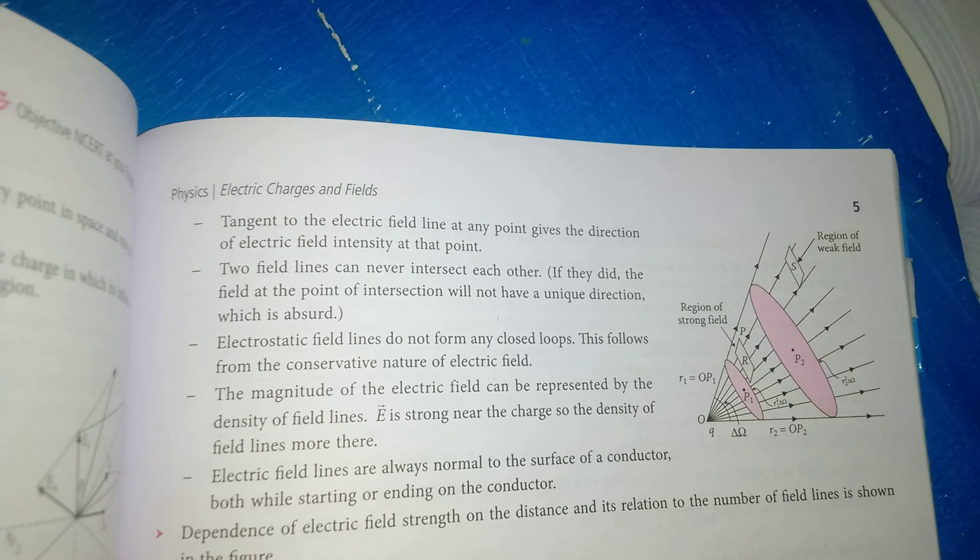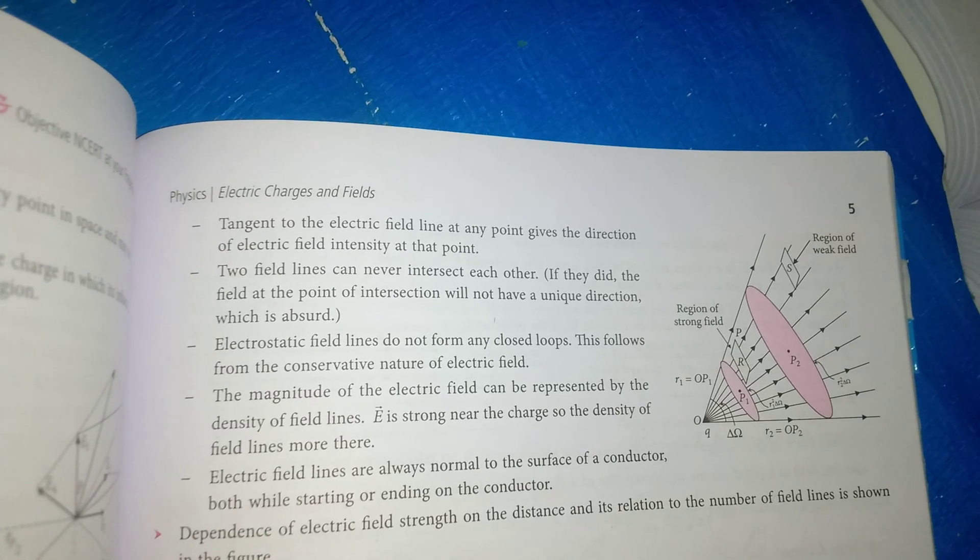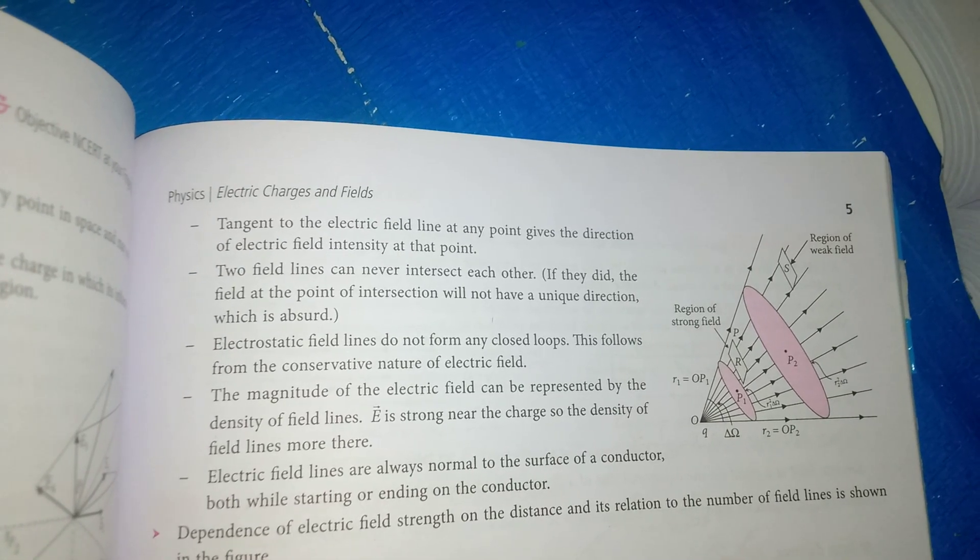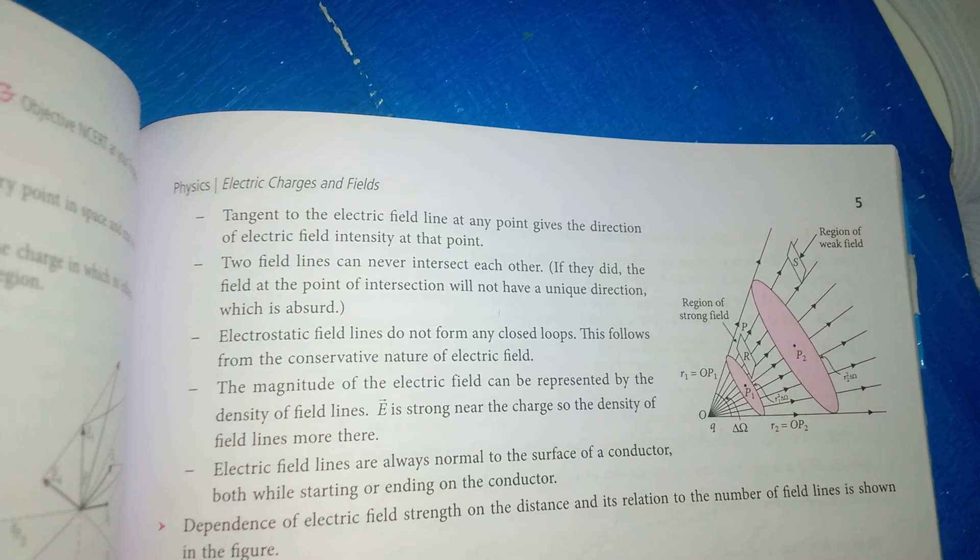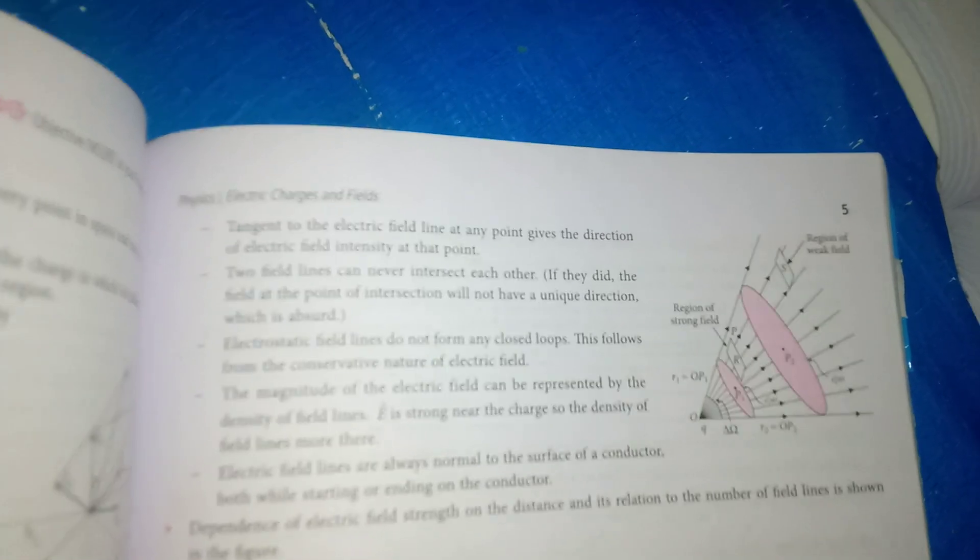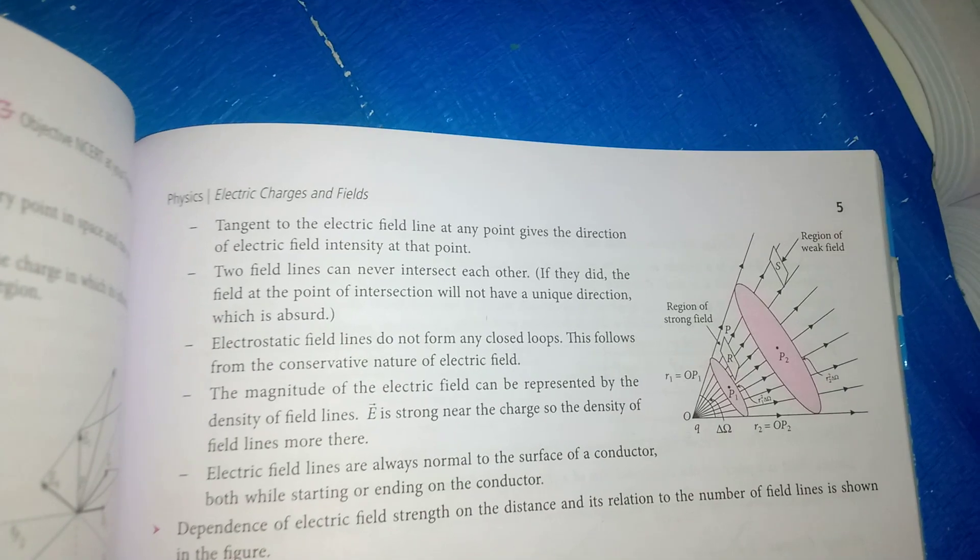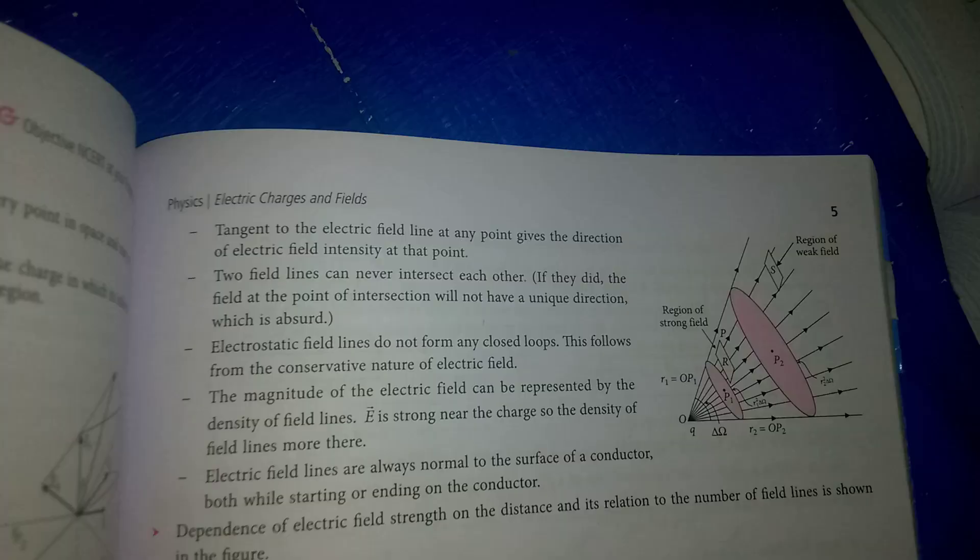The magnitude of the electric field can be represented by the density of field lines. E is strong near the charge, so the density of field lines is more there.